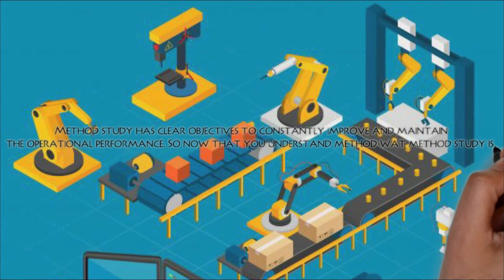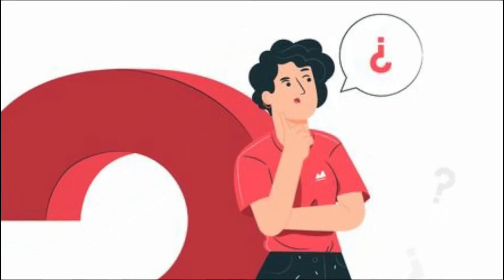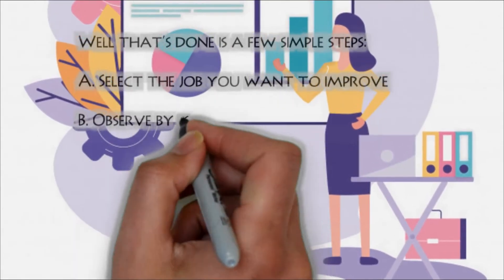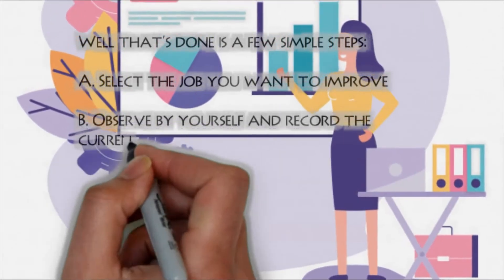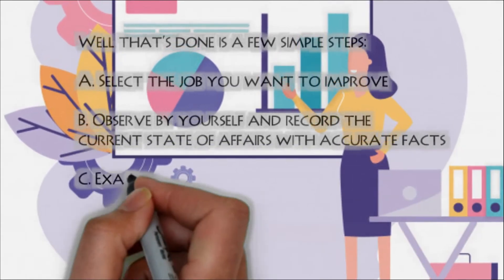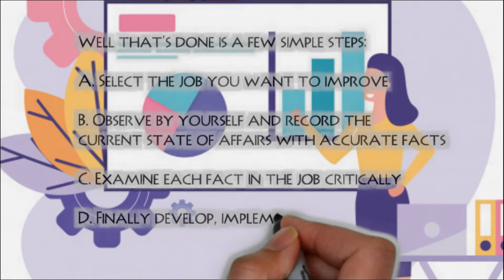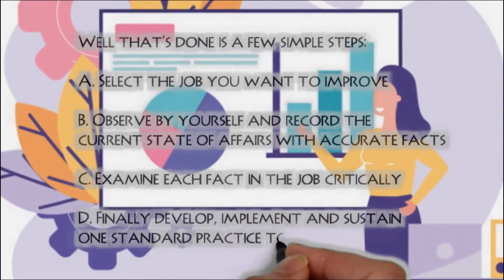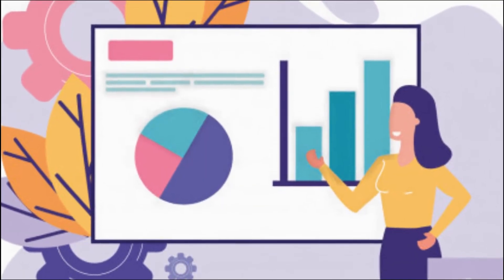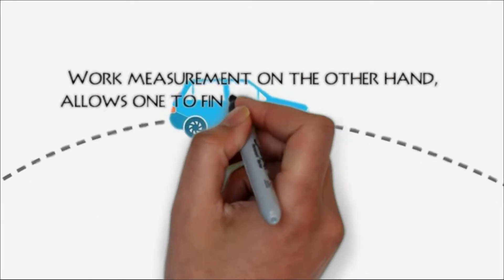Now that you understand what method study is, how do you apply it to any production process? That's done in a few simple steps: A) select the job you want to improve; B) observe by yourself and record the current state of affairs with accurate facts; C) examine each fact in the job critically; D) finally, develop, implement and sustain one standard practice to do that job.